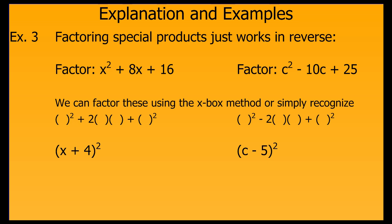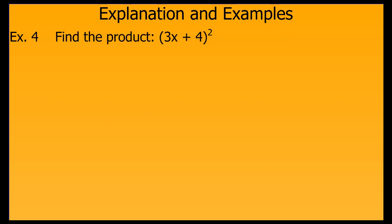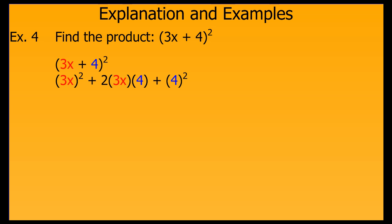Since the middle term is negative, our binomial will have a subtraction sign in it. Let's square another binomial, but this one has a coefficient in front of the variable — it works just the same way. I square the first term, do twice the product for the middle term, and then square the last term. So I get 9x squared plus 24x plus 16.